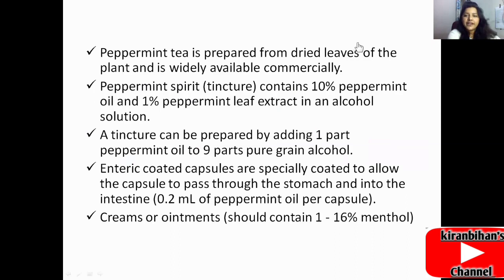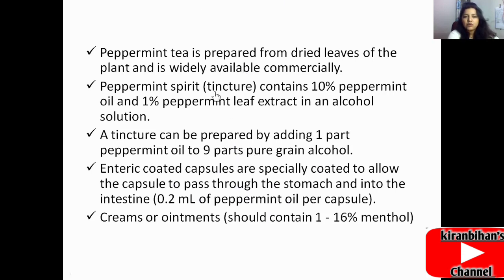Peppermint tea is prepared from dried leaves and is widely available commercially. Peppermint spirit or tincture contains 10% peppermint oil and 1% peppermint leaf extract in an alcohol solution; a tincture can be prepared by adding one part peppermint oil to nine parts pure grain alcohol. Enteric coated capsules are specially coated to pass through the stomach into the intestine, containing 0.2 ml of peppermint oil per capsule. Creams or ointments should contain 1 to 16% menthol. Tincture is a hydroalcoholic compound.